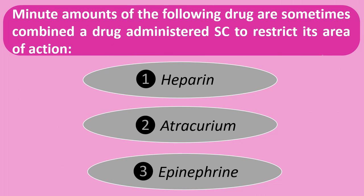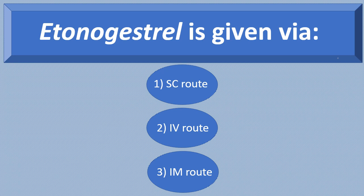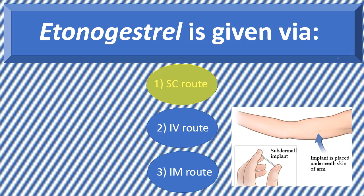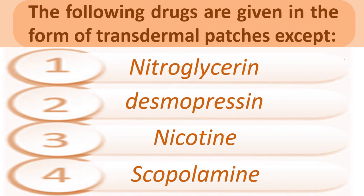Small amounts of which drug are sometimes combined with a drug administered subcutaneously to restrict its area of action? Yes, it is epinephrine. Etonogestrel is given via which route? Yes, it is given through the subcutaneous route as a single rod implanted for long-term activity. Which of the following drugs is given in transdermal patch form — except? Yes, except desmopressin.